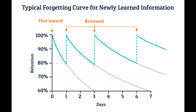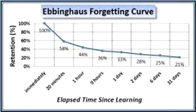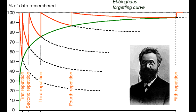He memorized lists of these nonsense syllables and then measured the time it took to relearn them after various retention intervals. Ebbinghaus discovered the forgetting curve, which illustrates the rapid decline in memory retention over time. He quantified this curve mathematically, revealing that memory loss is most significant shortly after learning.